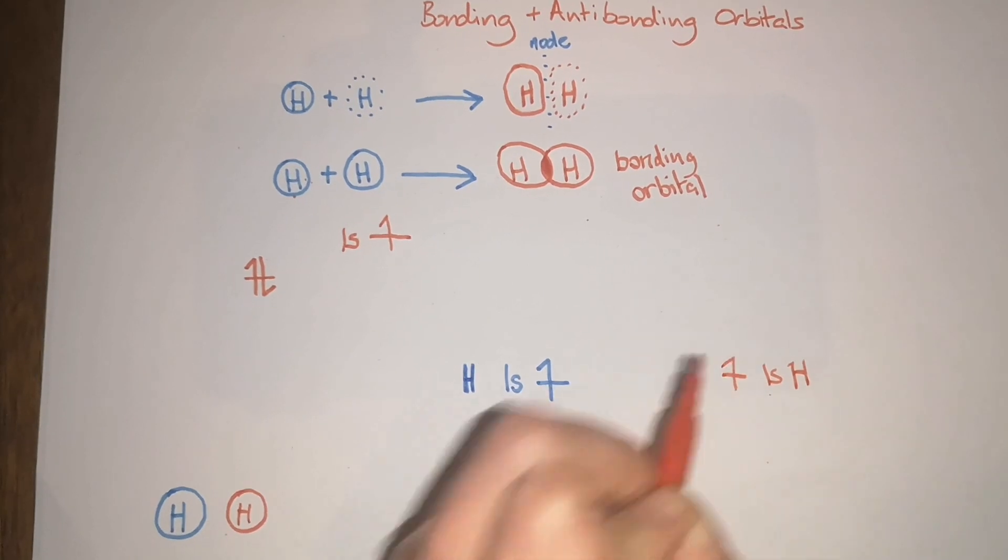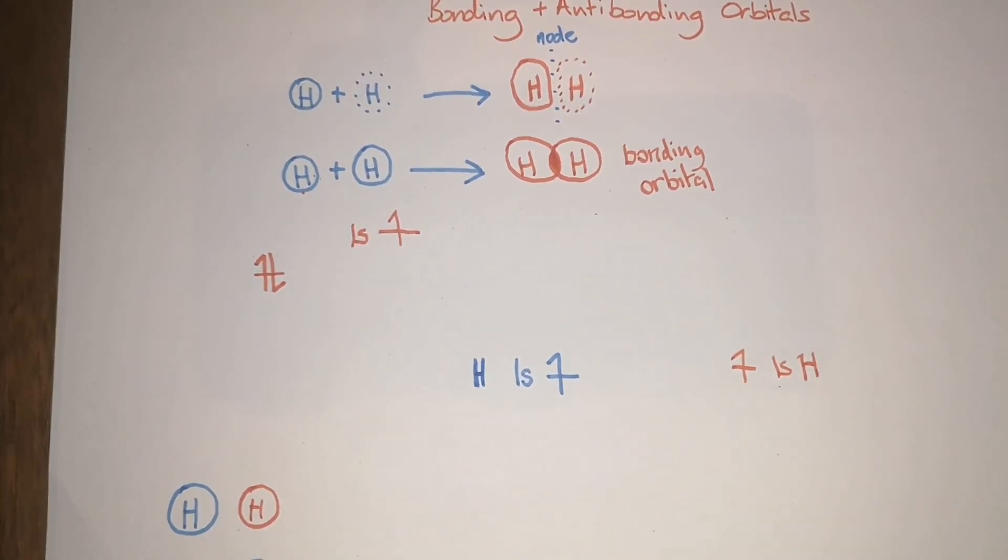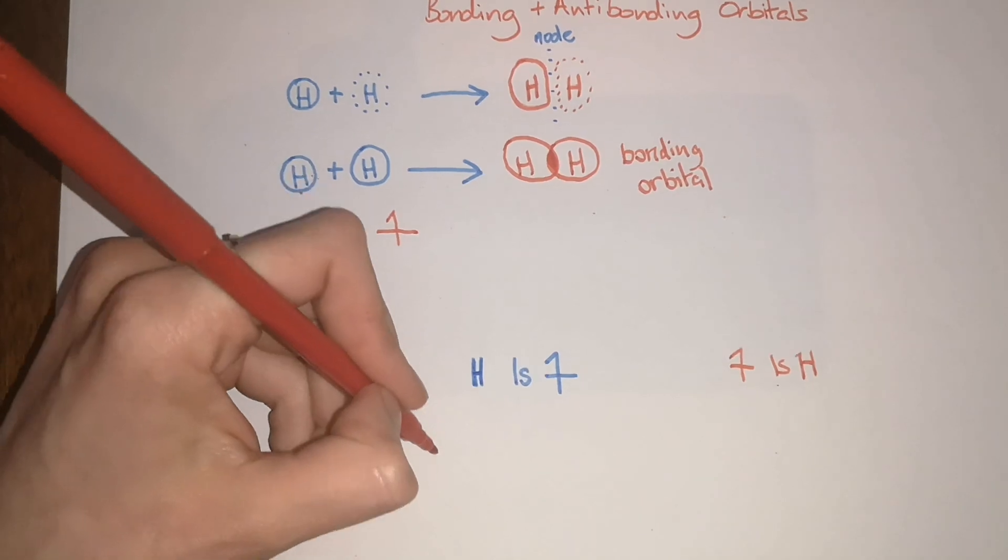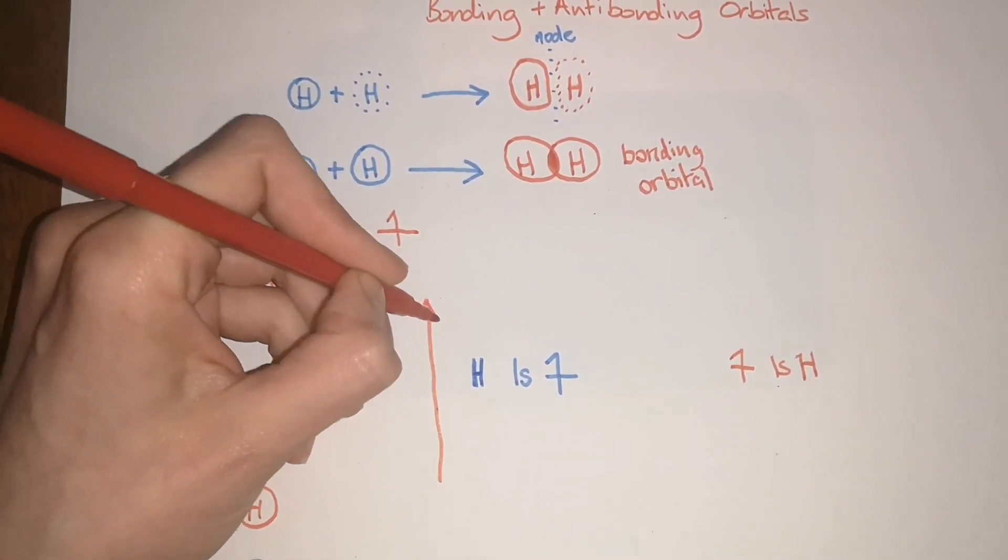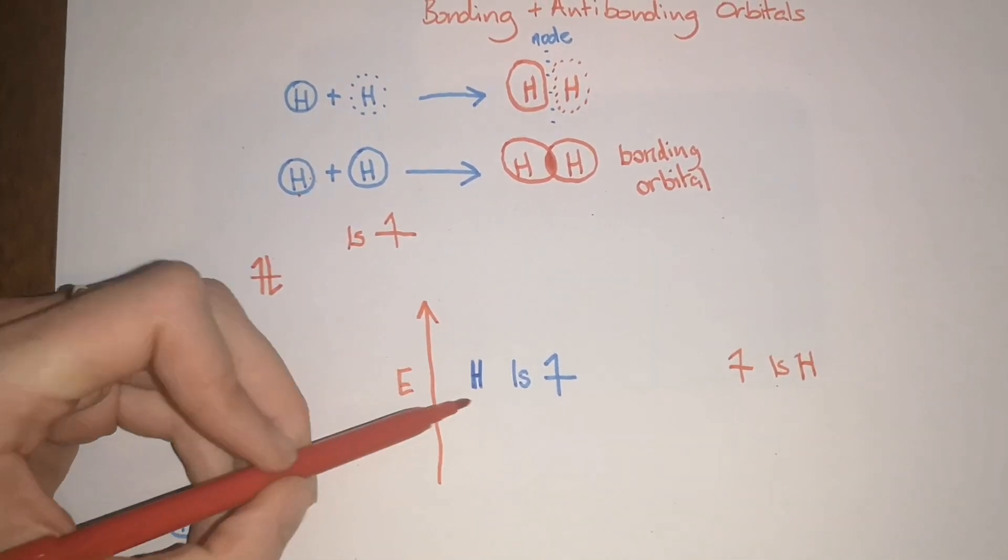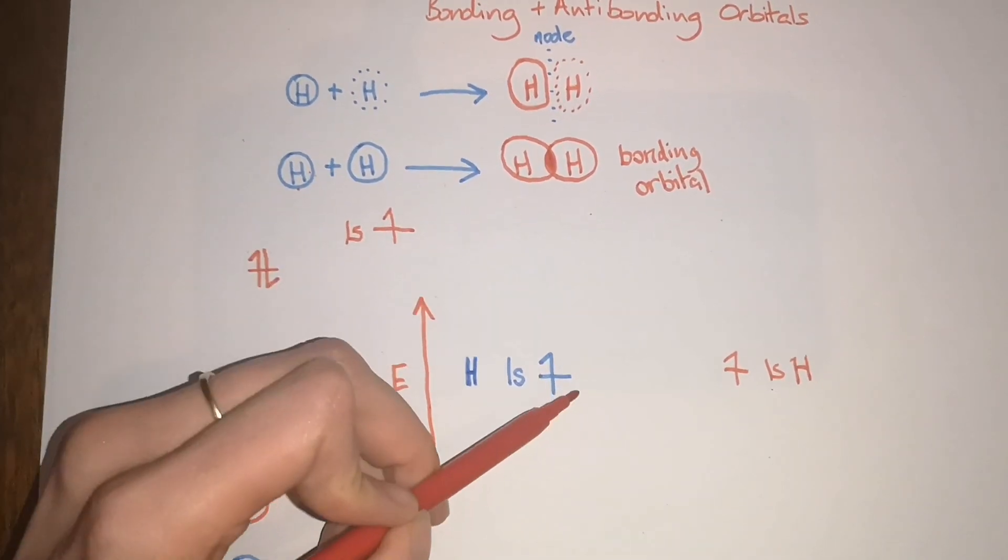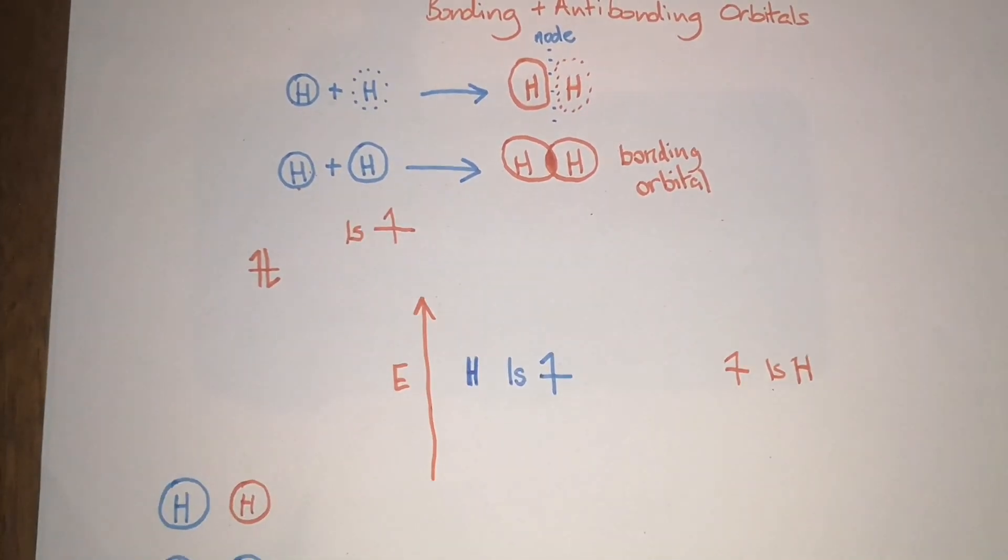Without having made a bond, and then if you have another 1s orbital over here, this will have one electron in it. These will start off at the same energy. Just to be clear, the x-axis here is energy, which I'm depicting with E. The higher up the orbital, the higher in energy it is, and the lower down it goes, the lower in energy it is.